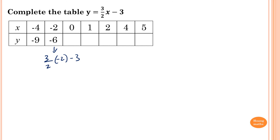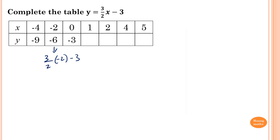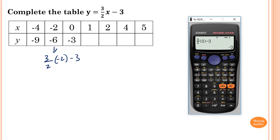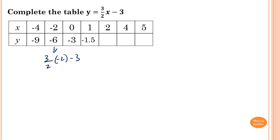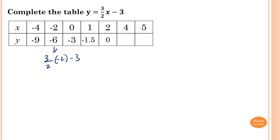When x is 0, I go back and change the value to 0 in the calculator — the result is negative 3. Same process applies: I keep replacing x with the next value. When x is 1, the answer is negative 1.5. When x is 2, the result is 0. And continuing, I get 3 and 4 giving me 4.5 and negative 4.5 respectively.